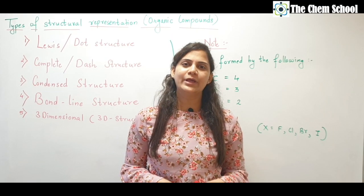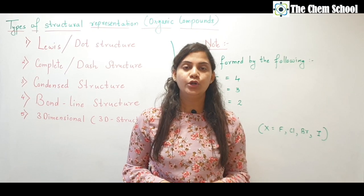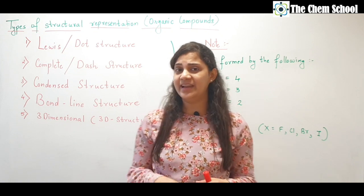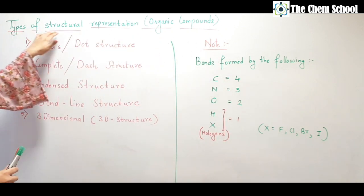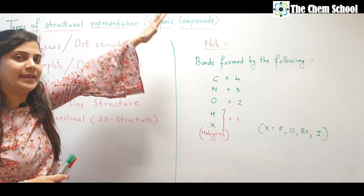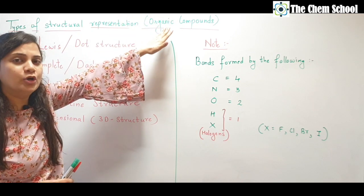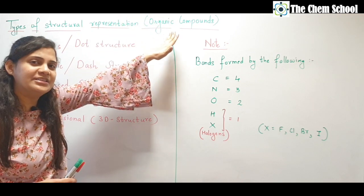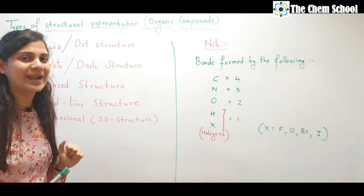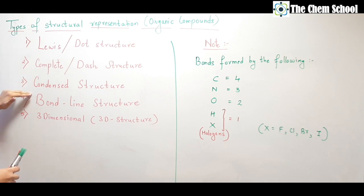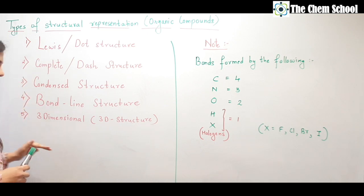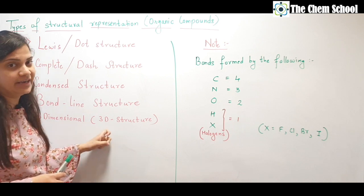Hello, welcome to the Chem School. Today the topic is the types of structural representation of organic compounds. Organic compounds can be represented broadly into five types: the Lewis or dot structure, complete or dash structure, condensed structure, bond line structure, and the last one is the three-dimensional structure, known as 3D structure.